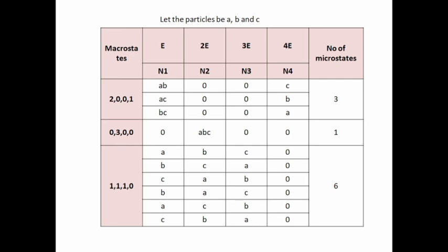Now we have to find the number of microstates for each macrostate. For the (2, 0, 0, 1) macrostate, the 3 particles can be arranged in 3 ways, so the number of microstates will be 3. For the (0, 3, 0, 0) macrostate, there is only one microstate — ABC, all particles in the 2E state. And for the (1, 1, 1, 0) macrostate, there will be 6 microstates. So in this problem, the total number of microstates is 10.